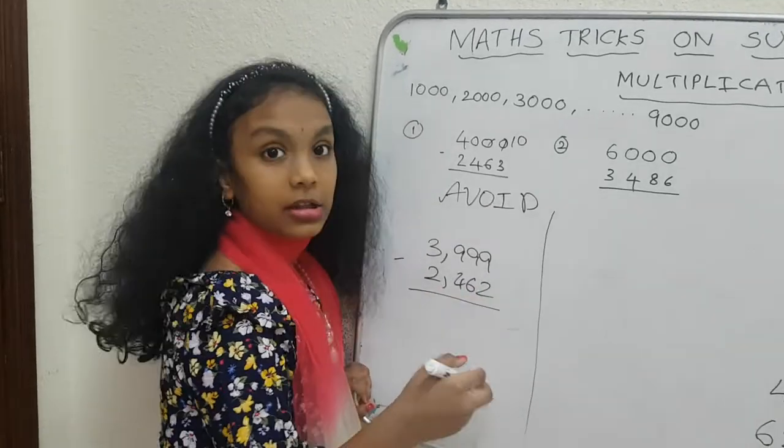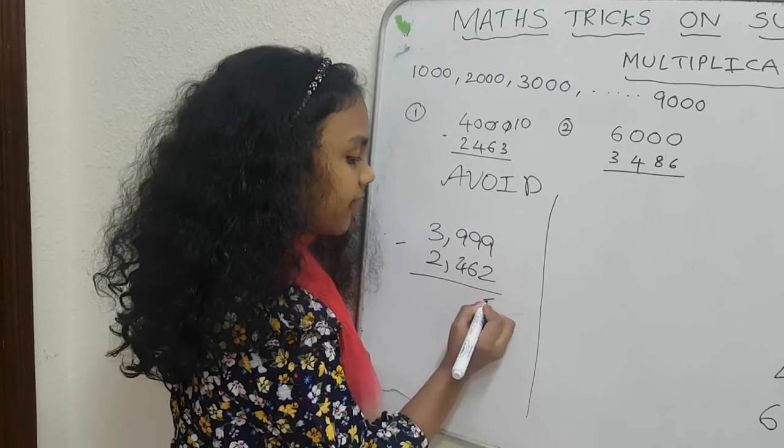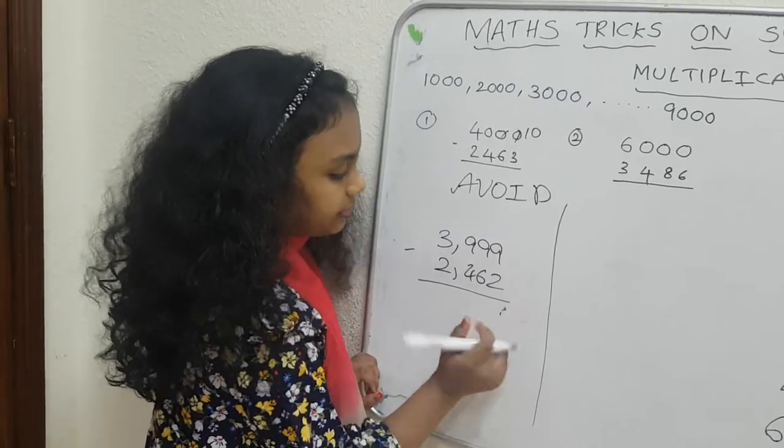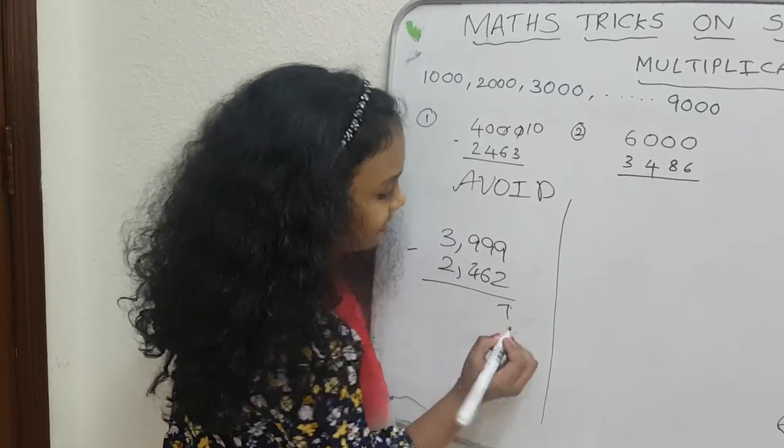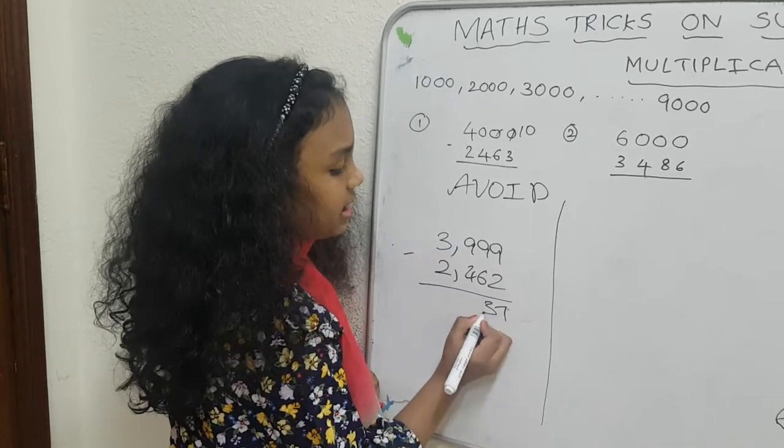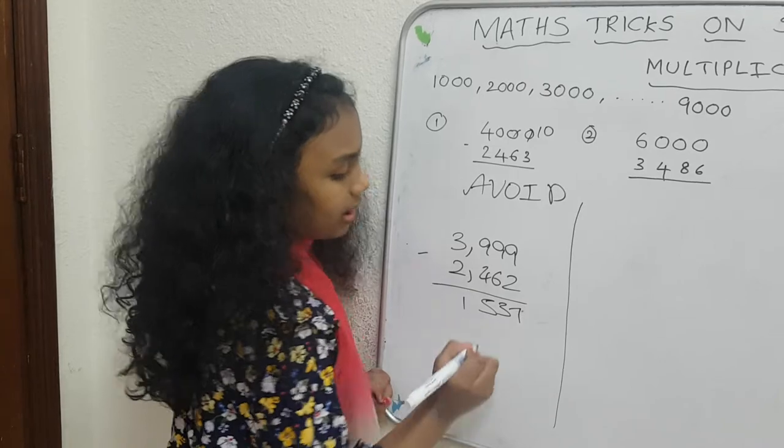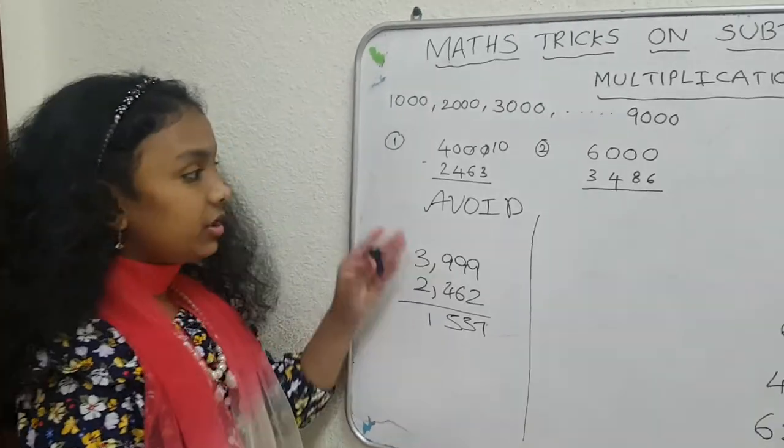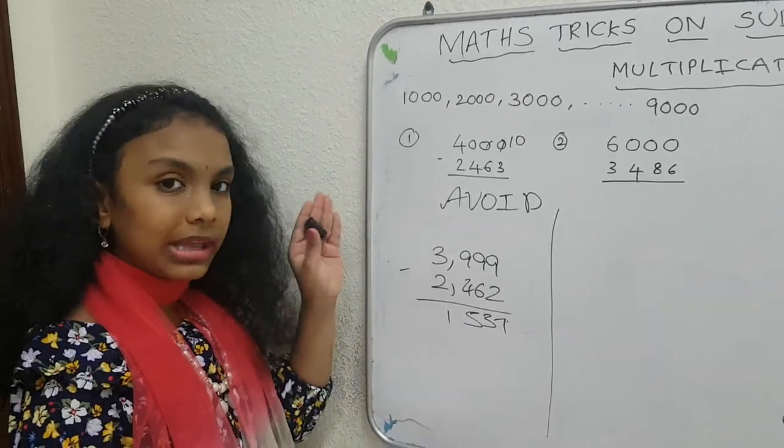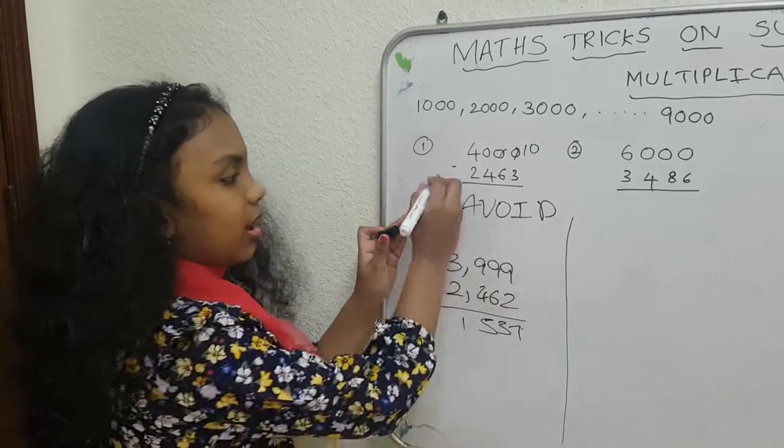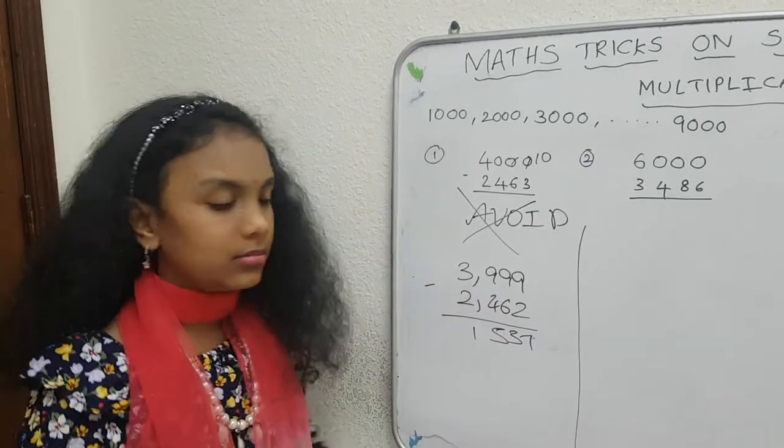Let's do it. 9 minus 2 is 7. 9 minus 6 is 3. 9 minus 4 is 5. 3 minus 2 is 1. See? Even if you do this trick also, you will get the same answer, but this is not the right way to do it. Avoid that trick.